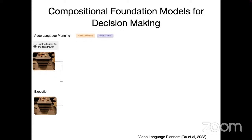You can also do probabilistic prompting with the models. We have a paper where you train a pretty small model on only 20 trajectories or so, and use that to adapt an existing model to a new domain.